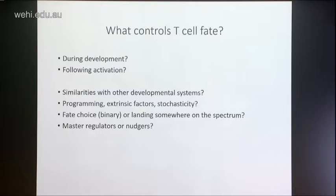We try to stop and think about what is in our experimental context that might be disguising some of the other fate determinants as we go, and it tends to make us realise that things are not quite as explicit as we might have thought looking at the data at first.